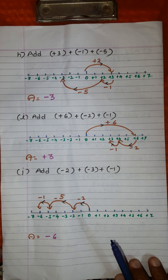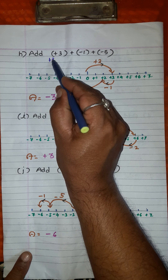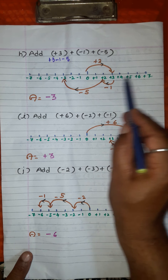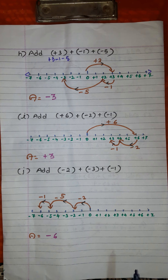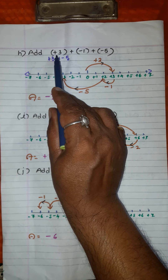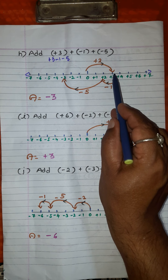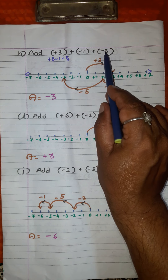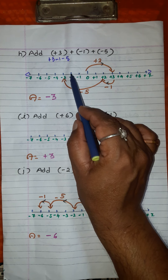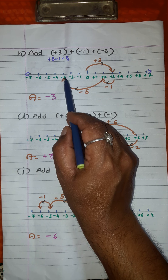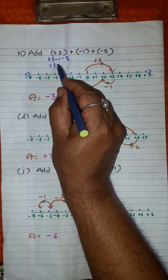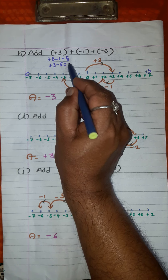Tenth problem: add plus 3, minus 1, and minus 5. Simplify: plus into minus is minus 1 and plus into minus is minus 5. Draw a number line, mark positive integers to the right of 0 and negative integers to the left of 0. Move plus 3 to the right: 1, 2, 3 — we arrive at point 3. Minus 1 means move left — we arrive at point 2. Then move minus 5 divisions to the left: 1, 2, 3, 4, 5. Where do we reach? Minus 3. Answer is minus 3. Mentally: 3 minus 1 minus 5 equals minus 3.